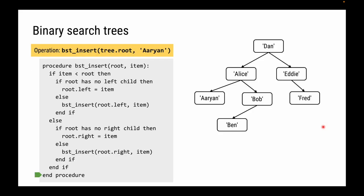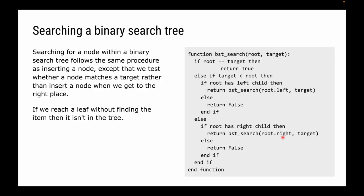Now when it comes to searching — that's actually created our binary search tree — items have been added in a specific order optimized for later retrieval. When we search for an item in a binary tree, we follow the exact same process we used when inserting, except that instead of looking to insert a node, we check if a node matches a target. If we reach a leaf and haven't found the item, then it's not in the tree.